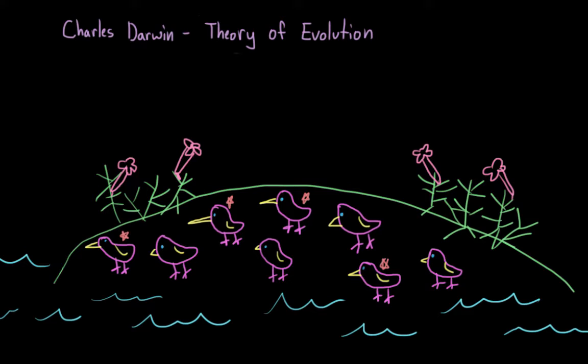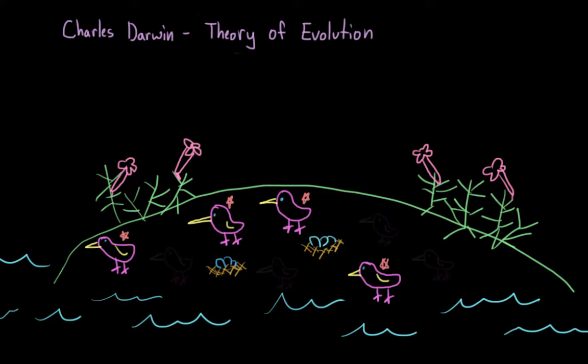And because our long beaked birds are the ones that can reach the seeds and eat, they are more likely to survive. And importantly, they're able to survive to an age where they can reproduce. And so over time, if these same environmental conditions continue, the population will eventually trend towards long, thin beaked birds.